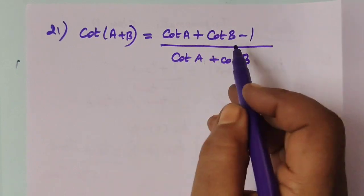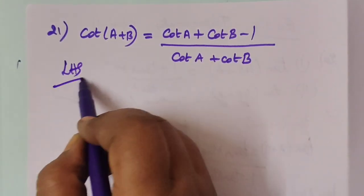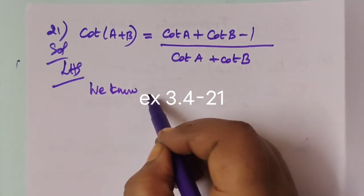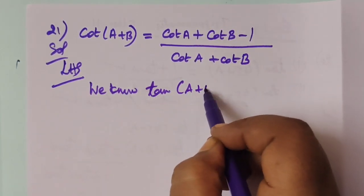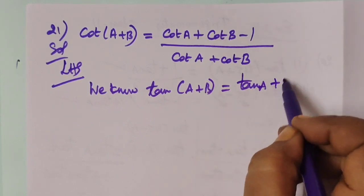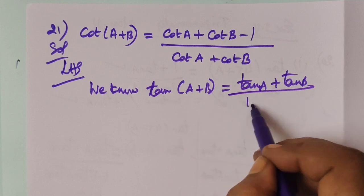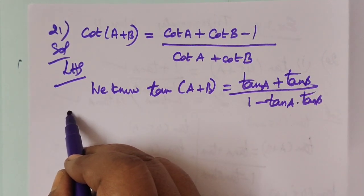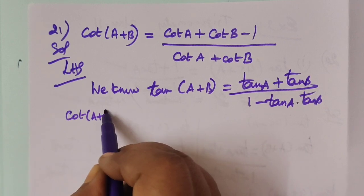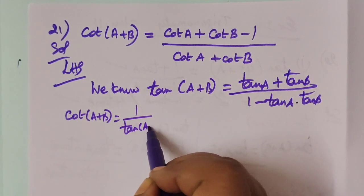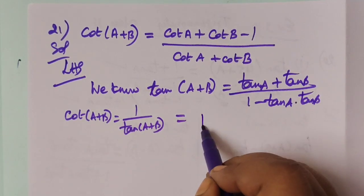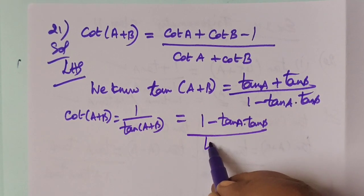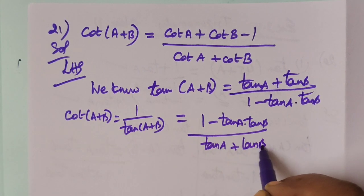Question number 21: cot(a + b) equals this expression. Consider LHS — cot(a + b). Since cot is the reciprocal of tan, cot(a + b) = 1 / [(tan a + tan b) / (1 - tan a · tan b)]. We substitute tan a = 1/cot a and tan b = 1/cot b.